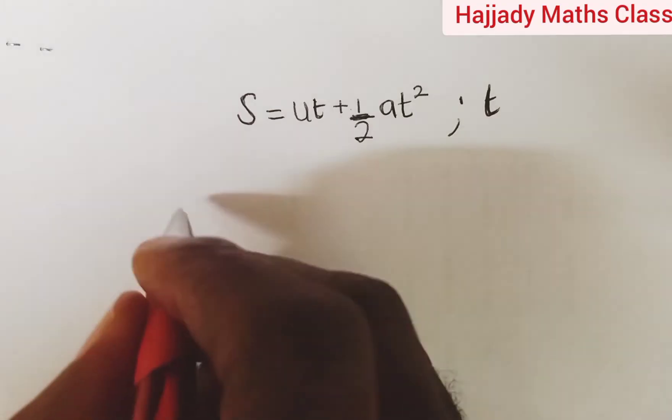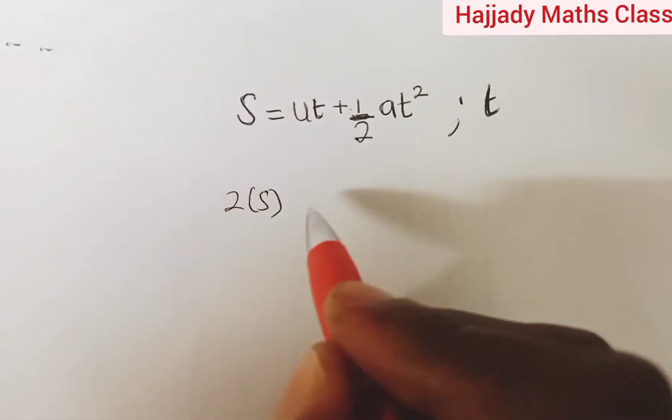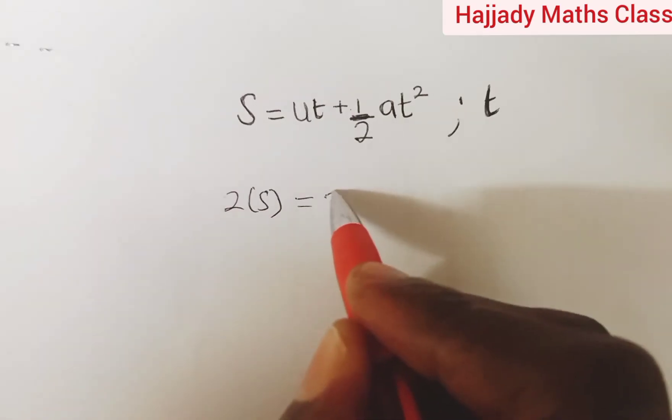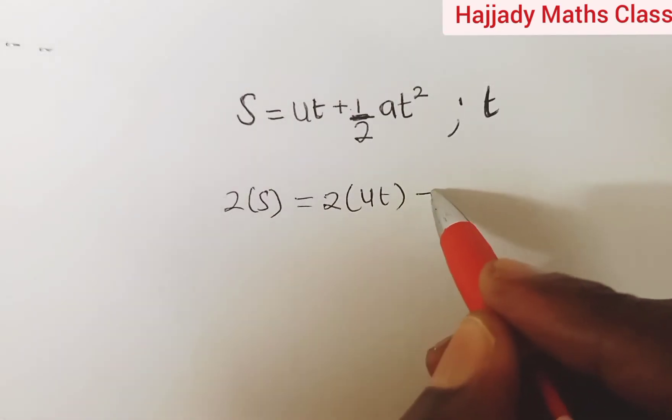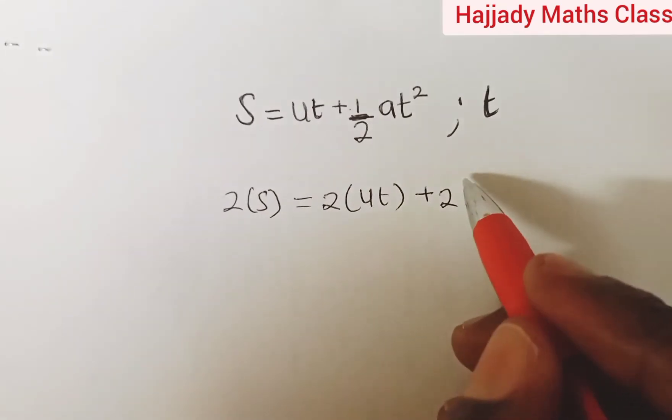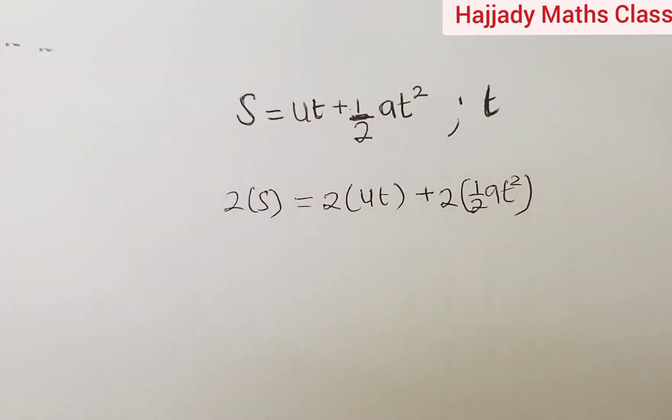So by doing so we have 2 multiplied by s equals 2 multiplied by ut plus 2 multiplied by 1/2 at squared. So this is the first step we are going to use.